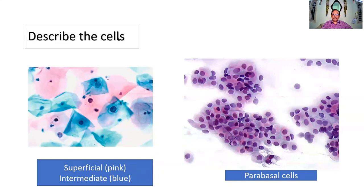I would like you to describe these cells. In the first picture there is a mixture of two components: large eosinophilic cells with a pyknotic nucleus — these are superficial cells — and another set with bluish-green cytoplasm and a larger nucleus, which are intermediate cells. Compare this with the second image, where all cells are small with a relatively larger nucleus — these are the parabasal cells immediately above the basal layer, which you do not usually see. So: superficial, intermediate, and parabasal cells.